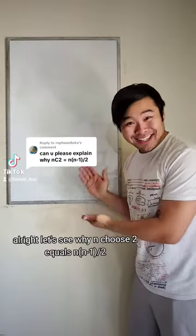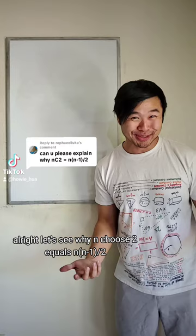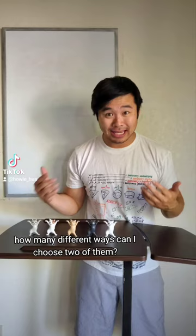All right, let's see why n choose 2 equals n times n minus 1 divided by 2. So n choose 2 means that if there are n objects, how many different ways can I choose two of them? And order doesn't matter.